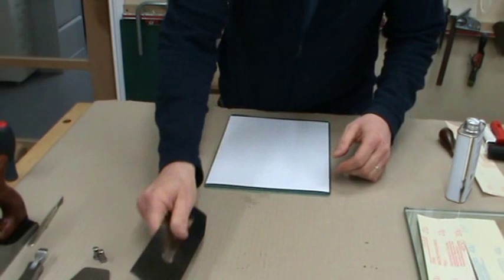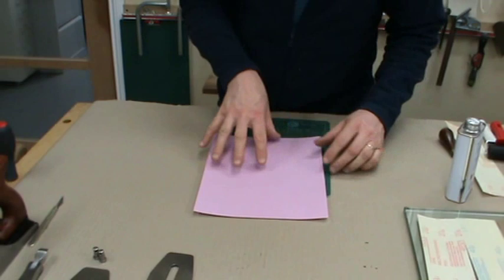I only use scary sharpening. It's a system we use a lot in our furniture school. This is the finest paper we tend to go down to, that's a 3 micron, equivalent to about 8,000 or 9,000 grit.